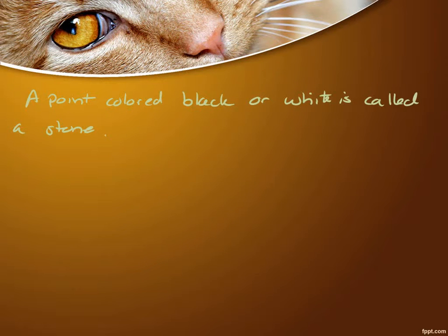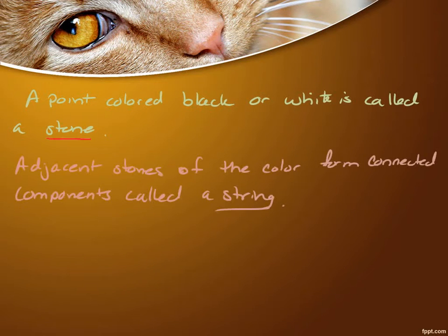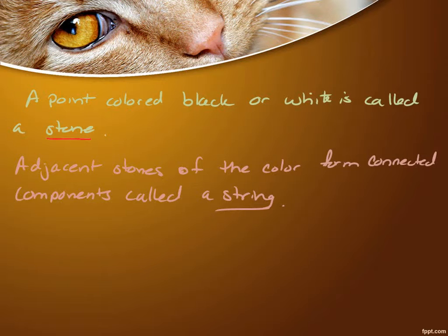A point colored black or white is called just a stone. Adjacent stones of the same color forming connected components is called a string. So if you have a list of adjacent stones next to each other of the same color and they're all connected together, we call that a string. An empty point adjacent to a string is called a liberty of that string. They use this language all the time in any mathematical and even game-playing descriptions of Go.